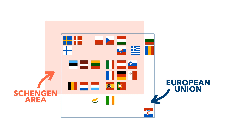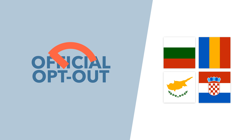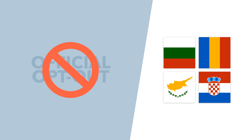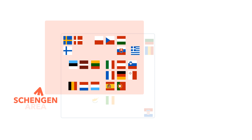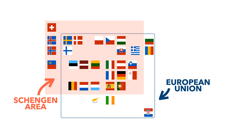There are also another four EU countries who aren't part of Schengen: Bulgaria, Croatia, Cyprus, and Romania. However, unlike Ireland, they don't have an official opt-out, and therefore will have to join again in the future. That brings us down to 22, but there were 26 members. You also have to add in Switzerland, Iceland, Norway, and Liechtenstein, who are all part of Schengen, despite not being EU members.